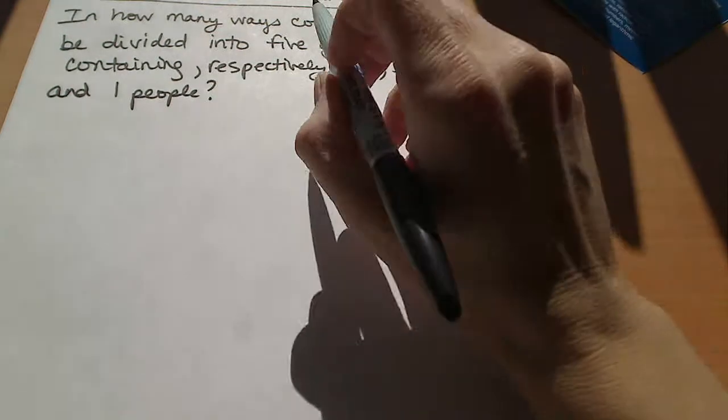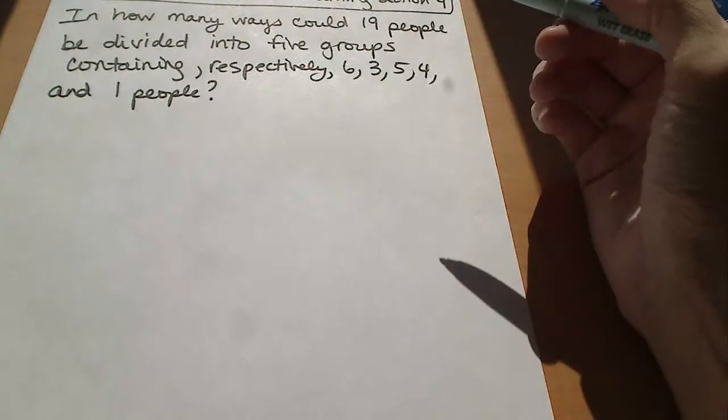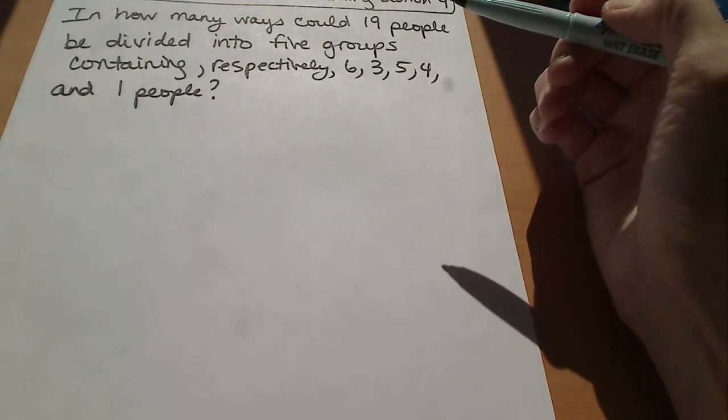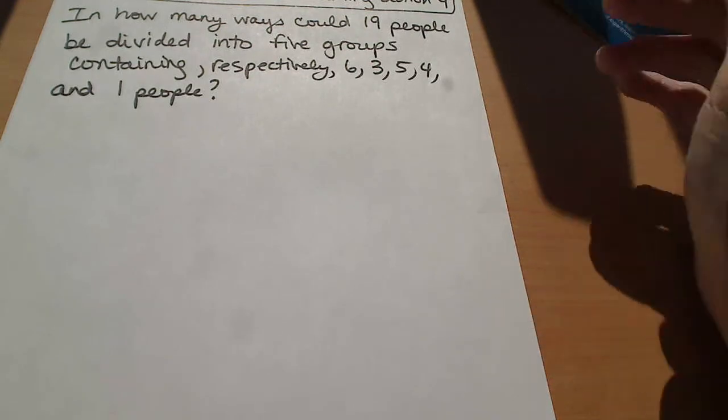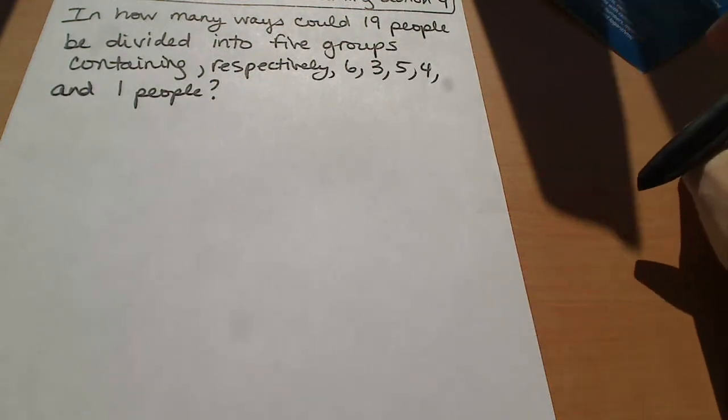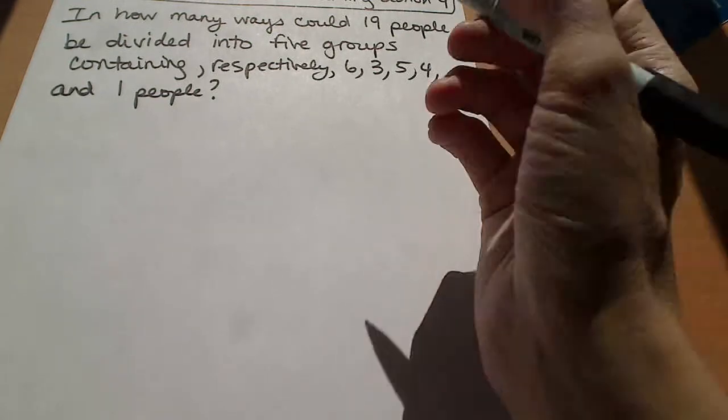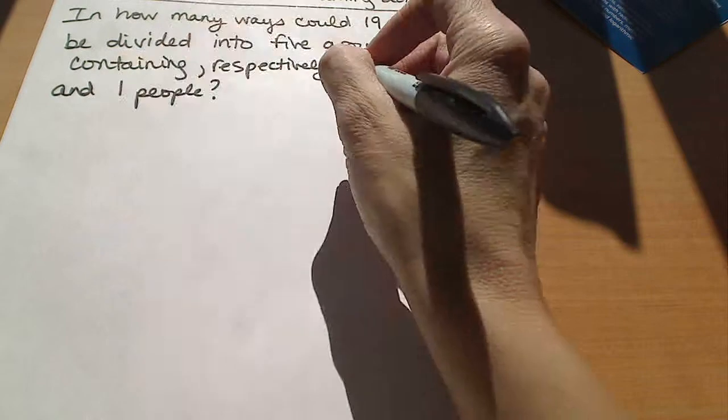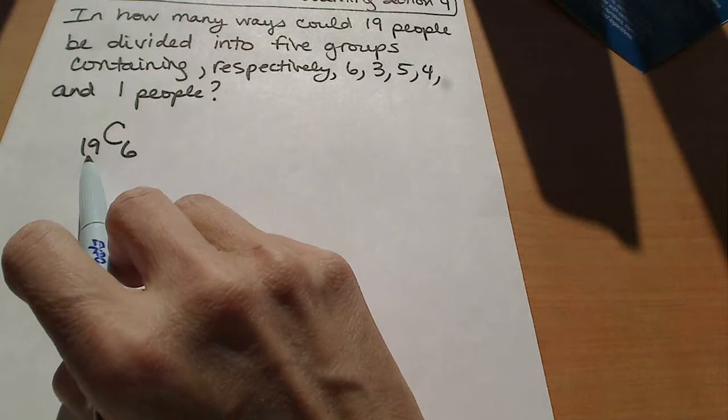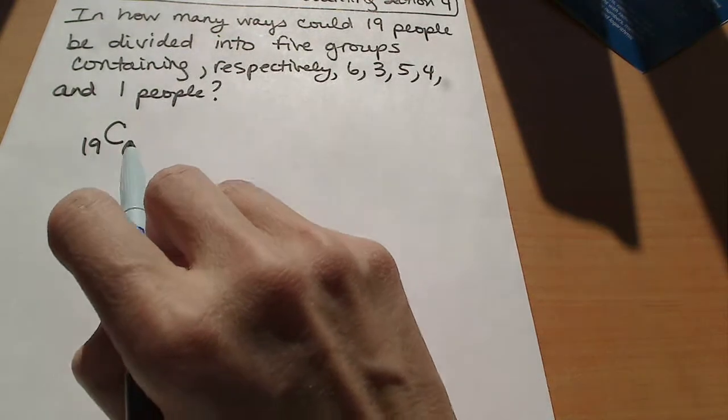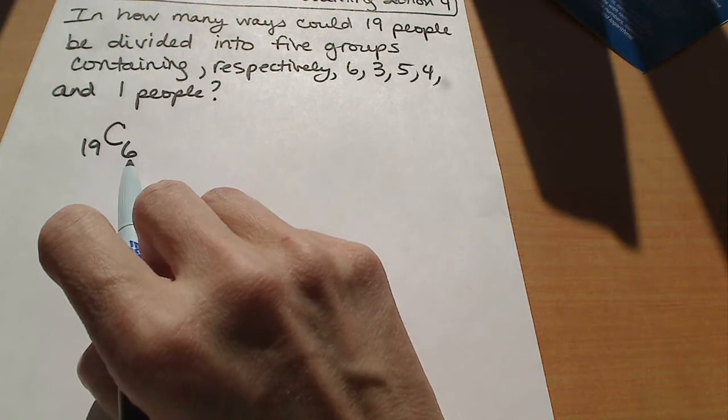So if we want to choose 6 people from a group of 19, this is a combination because the order doesn't matter. When you have a group of people, whether the first person gets chosen first or last, it doesn't make any difference. We're not assigning titles or anything like that. So these are combinations. The way that we would choose 6 people is we have 19 people to choose from and then we're choosing 6. So this would be a combination of 19 taken 6 at a time.